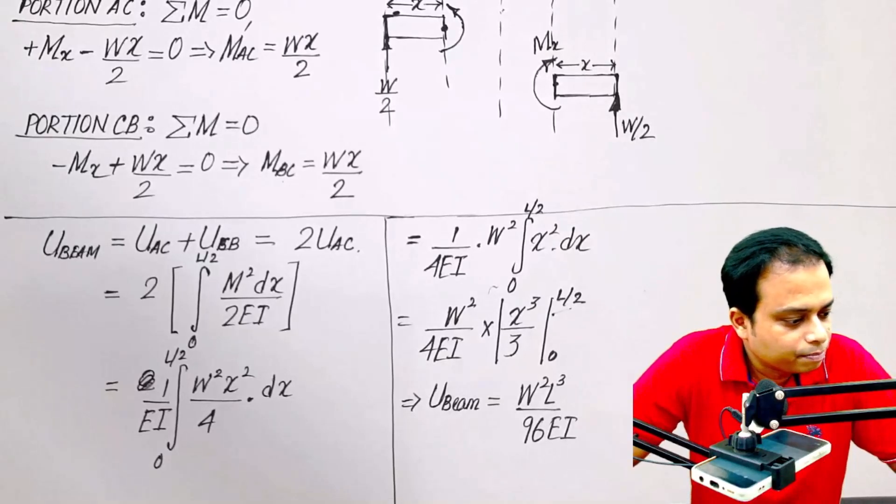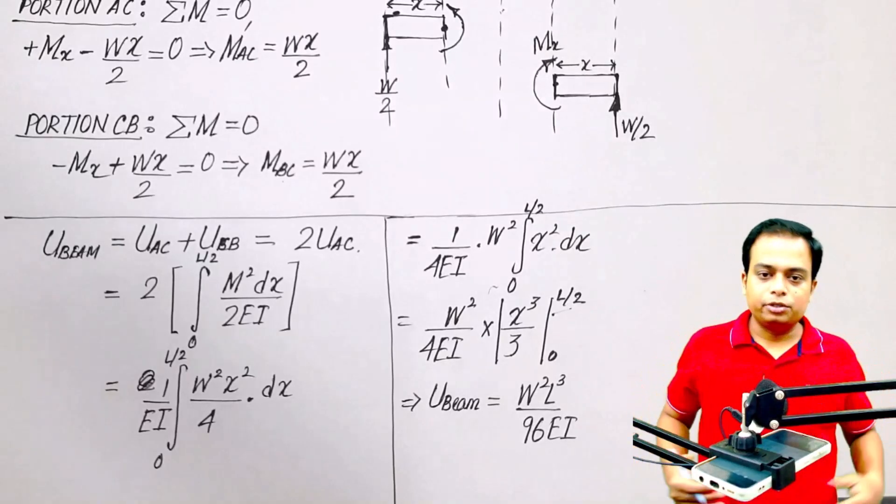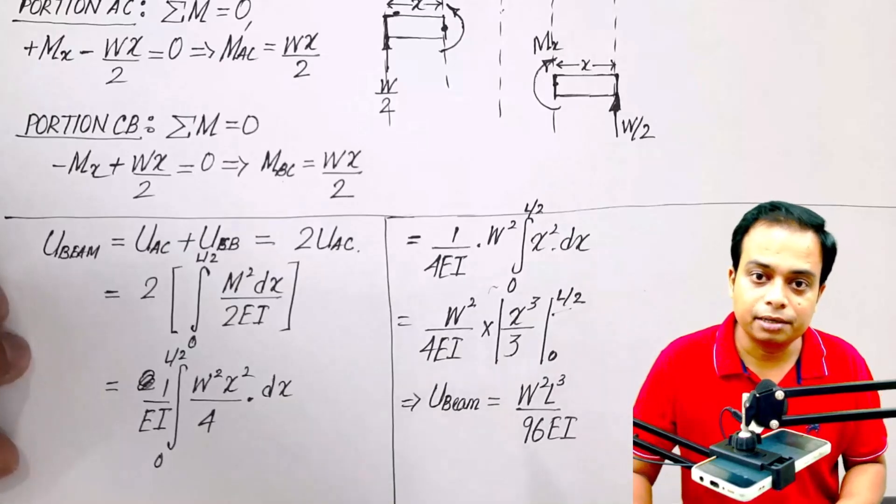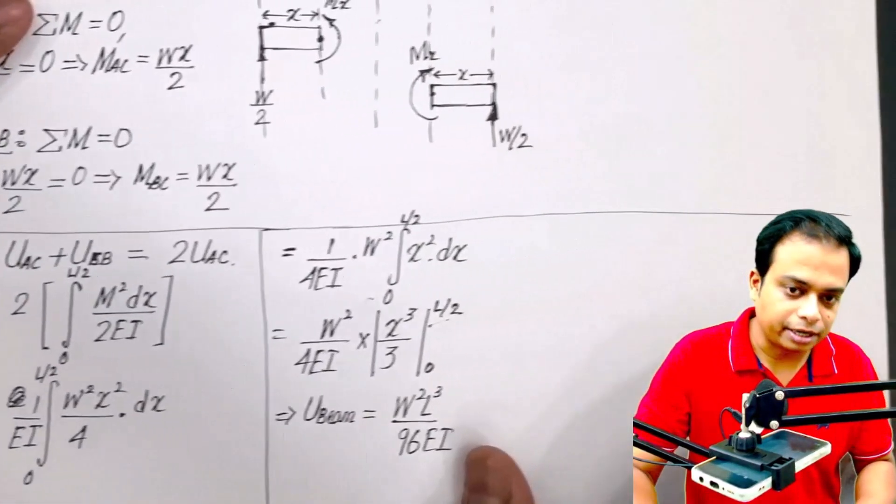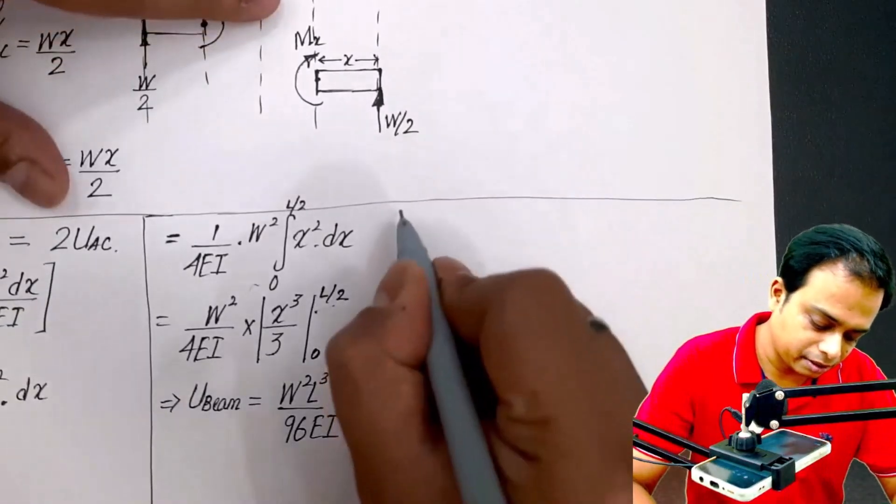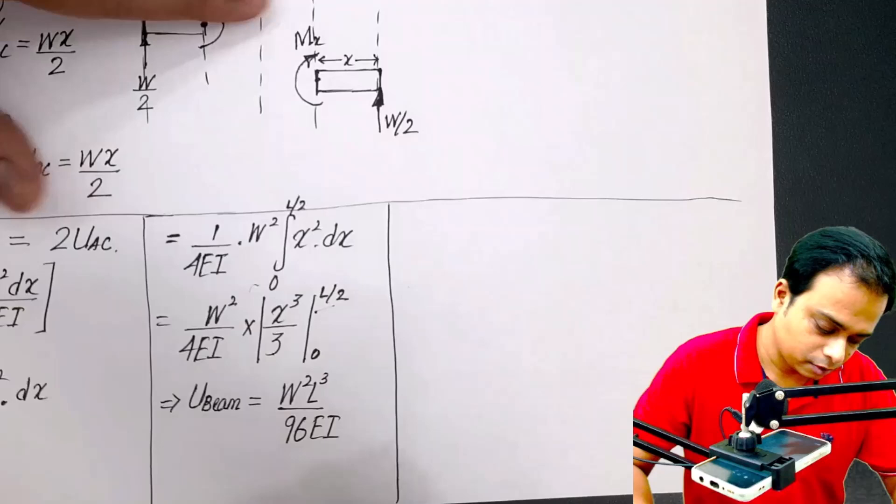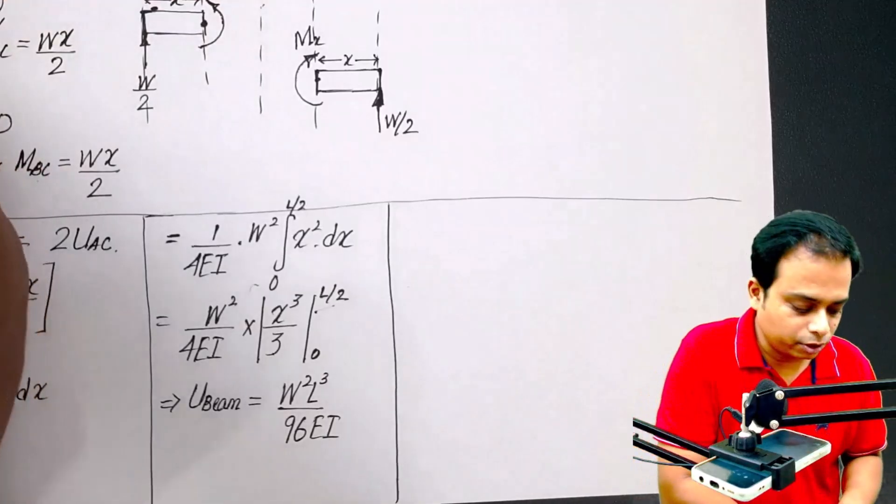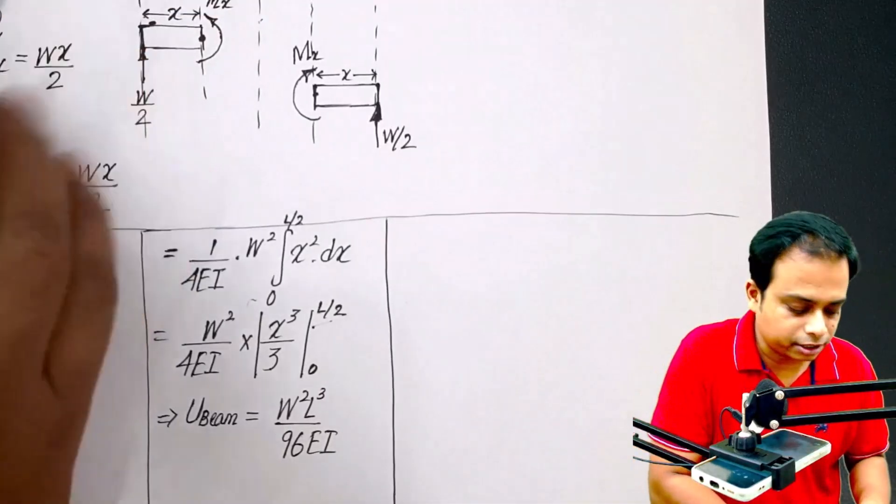Ah, W squared L cube upon 96 EI. Now you just need to differentiate this partially, okay? And then you are going to get the exact value of the deflection. It's very simple. Let me do it here. What are we going to use? We are going to use this Castigliano's theorem.